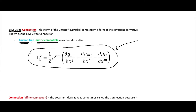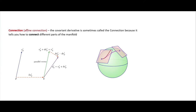The connection, or affine connection, is essentially connecting two different parts of your manifold. So if this green shape here is our manifold M, with point P and point Q, then the salmon-colored region is our tangent space at P on our manifold, and the other region is our tangent space at Q. If we want to connect a vector at one point to that same vector over at the other point, what we're doing is using those Christoffel symbols — because that is our connection.